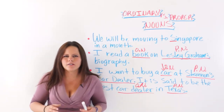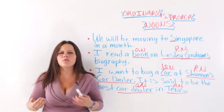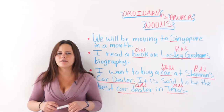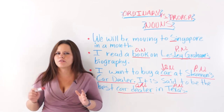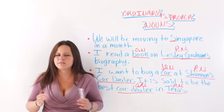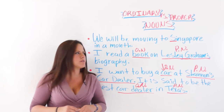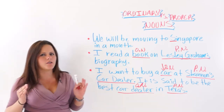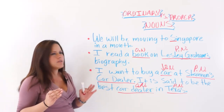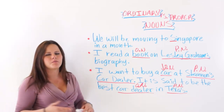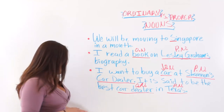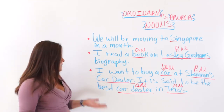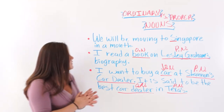Proper nouns must always, always, always be capitalized. The first letter in the word must always be capitalized in a proper noun. And in an ordinary noun it must never be capitalized, unless it's the beginning of the sentence.